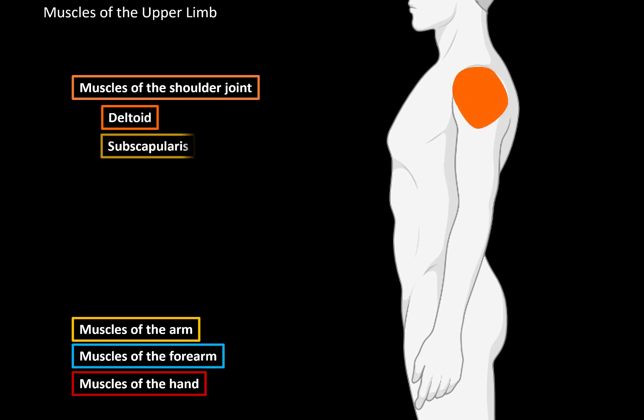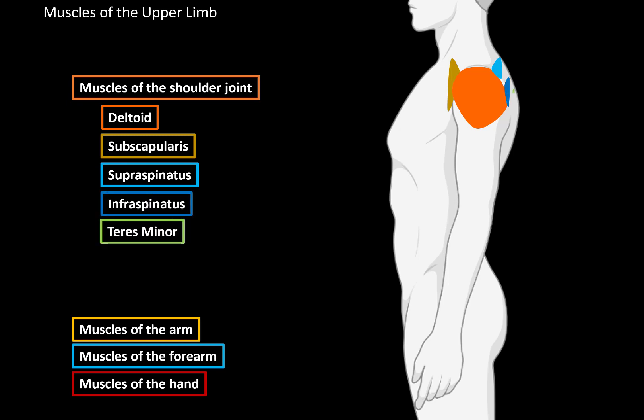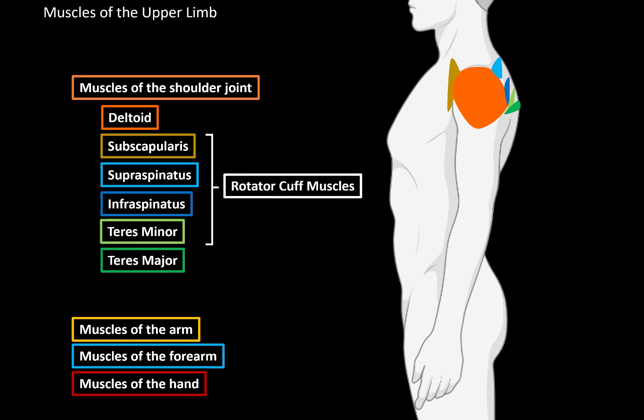The shoulder joint muscles are the deltoid muscle, subscapularis, supraspinatus, infraspinatus, teres minor, and teres major. All of these muscles surround the shoulder joint. The supraspinatus, infraspinatus, teres minor, and subscapularis form the rotator cuff muscles, which allow the rotation of the humerus at the shoulder joint. They provide stability to the shoulders and prevent dislocation. These muscles are clinically important because any rotator cuff injury can cause a dull pain in the shoulders, which often worsens when you elevate the arm in a certain way.